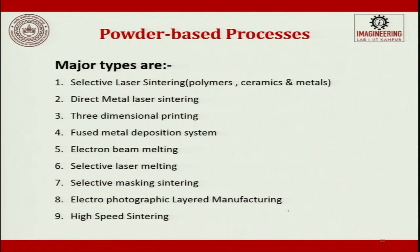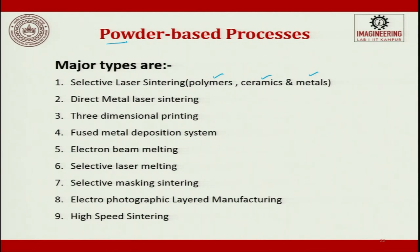Today we are looking forward to functionally graded materials — your skin is a functionally graded material. The major types that fall under powder-based processing are: selective laser sintering (which can be polymer, ceramic, or metal-based), direct metal laser sintering, three-dimensional printing, fused metal deposition, electron beam melting, selective laser melting, selective masking sintering, electrophotographic layered manufacturing, and high-speed sintering. These are all the techniques which come under powder-based processing in rapid manufacturing.